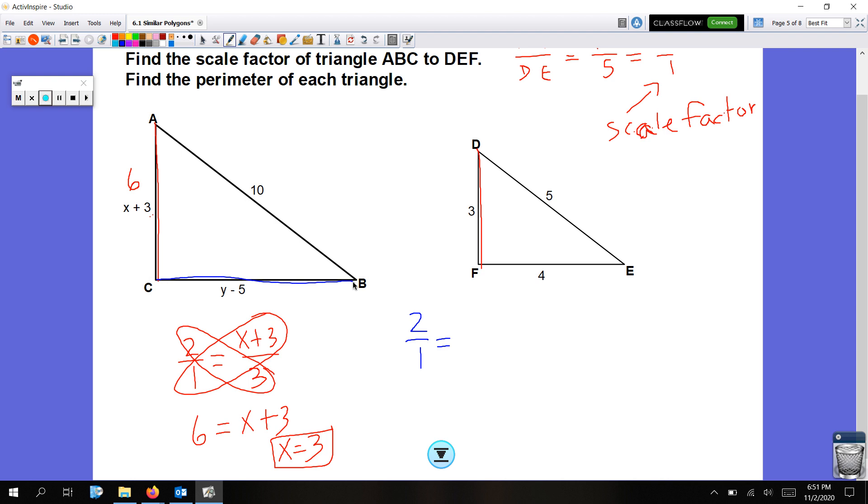Now, I'm going to solve for Y. I'm still going to use that scale factor and set up my proportion. Y, the term with Y is on side CB. So CB, Y minus 5, corresponds to FE, which is 4. We're going to cross-multiply again. And we get 8 is equal to Y minus 5. And I add 5 to both sides. I get Y is equal to 13. If I plug in 13 here, I get 8.